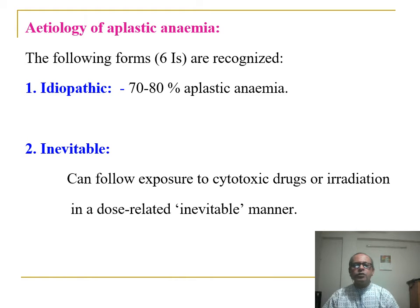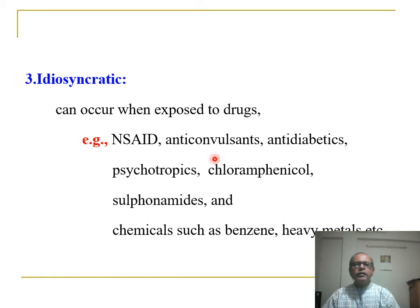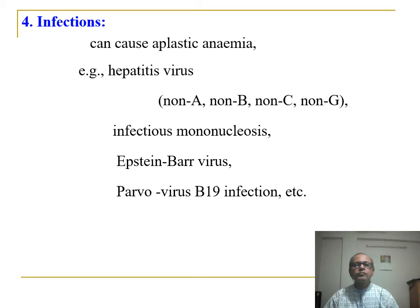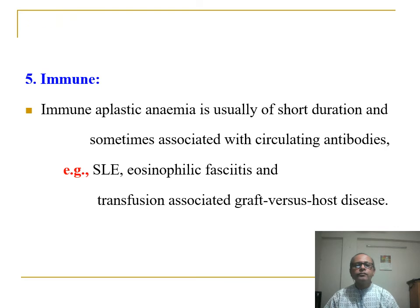The etiology of aplastic anemia — there are six I's. Number one: idiopathic, which is the most common at 70–50%. Inevitable: can follow exposure to cytotoxic drugs, irradiation in a dose-related manner. Idiosyncratic: can occur when exposed to certain drugs such as NSAIDs and anticonvulsants. Infections can cause aplastic anemia such as hepatitis B virus, infectious mononucleosis (Epstein-Barr virus), and parvovirus B19. Immune: usually of short duration, sometimes associated with circulating antibodies, for example systemic lupus erythematosus. Iatrogenic: transfusion-associated graft-versus-host disease.